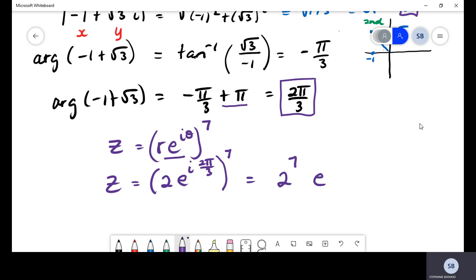So expanding our brackets will give us 2 to the power of 7, as well as we would multiply 2 by 7, which gives us 14i, sorry 14π all over 3. Now we can clarify this answer. You can work out 2 to the power of 7 and that gives us a value of 128.